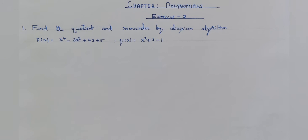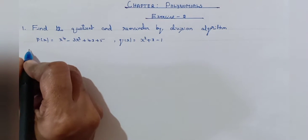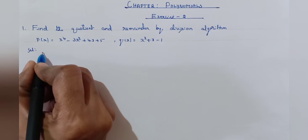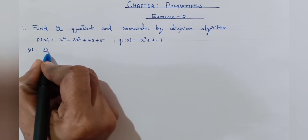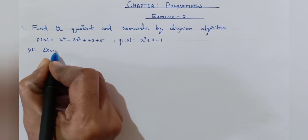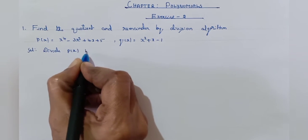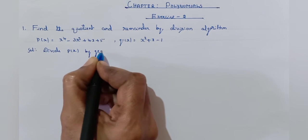P of x is equal to x to the power of 4 minus 3x square plus 4x plus 5. G of x is equal to x square plus x minus 1. Divide P of x by g of x.